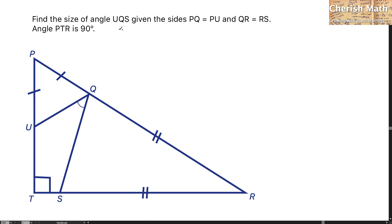Find the size of angle UQS given the sides PQ equal PU and QR equal RS. Angle PTR is 90 degrees.